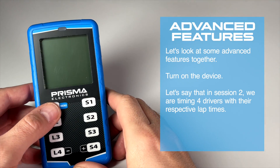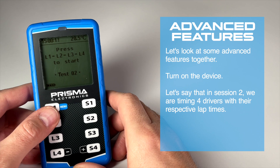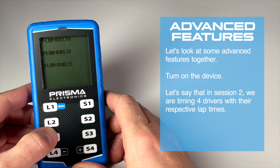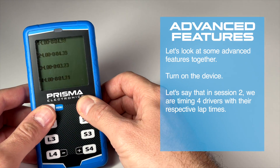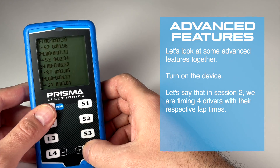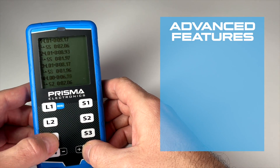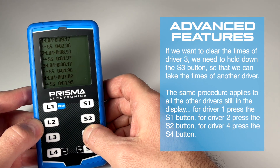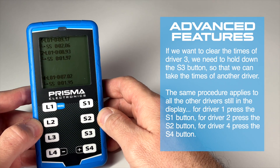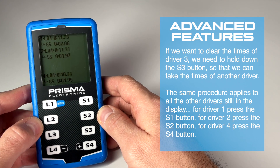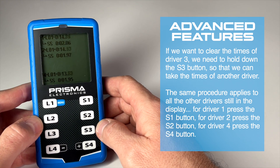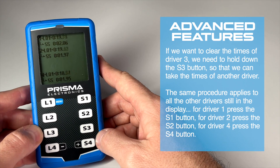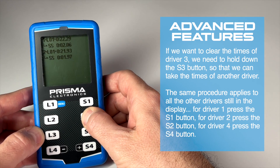Let's look at some advanced features together. Turn on the device. Let's say that in session two, we are timing four drivers with their respective lap times. If we want to clear the times of driver three, we need to hold down the S3 button so that we can take the times of another driver. The same procedure applies to all the other drivers: for driver one, press S1; for driver two, press S2; for driver four, press S4.